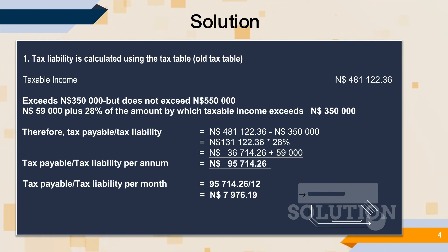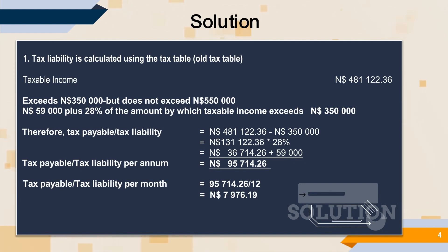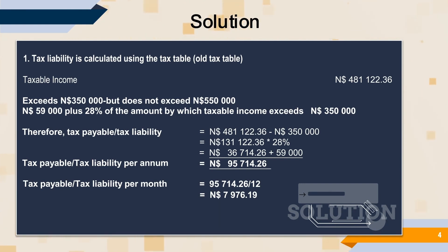Your tax liability or tax payable per year on an income of $481,122.36 as per the new tax table will be $95,714.26. To calculate your monthly tax liability or tax payable, you will take $95,714.26 and divide that by 12.